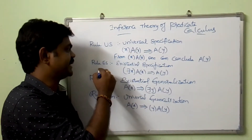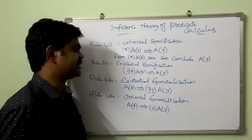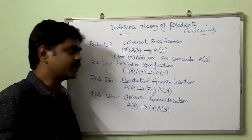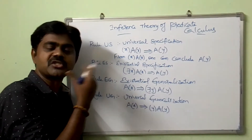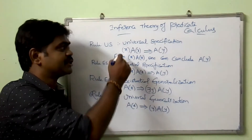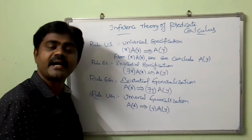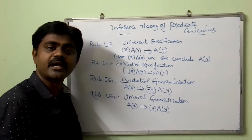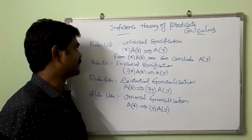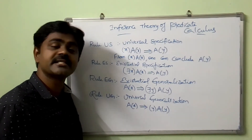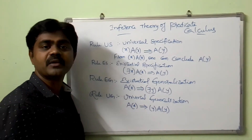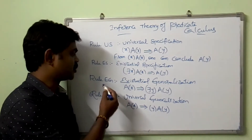Next is Rule ES — existential specification. There exists x, A(x), one can conclude A(S). So in place of for all, here we get there exists x. From there exists x, A(x), we can conclude A(S). That is existential specification.